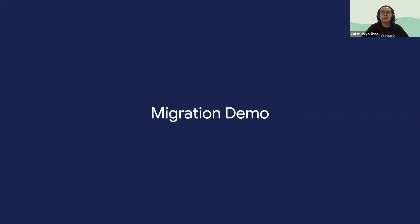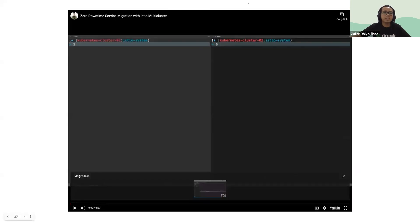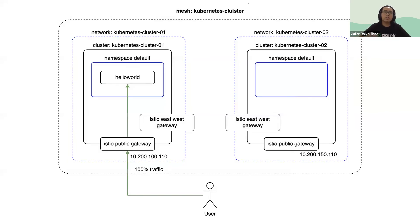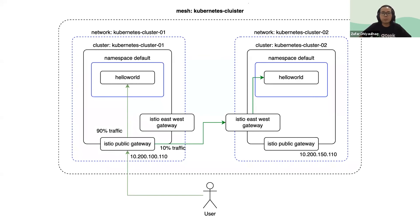We can also implement this for an active-active flow. For example, in Kubernetes 0.1 we have 100% of traffic going to that cluster, and we want, say, 10–15% of traffic to go to Kubernetes cluster 0.2. We can achieve this automatically via Istio service mesh — we can configure the percentage via the locality load balancer, and we can have active-active Kubernetes clusters.